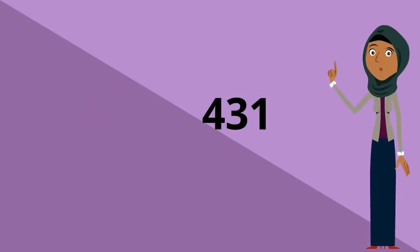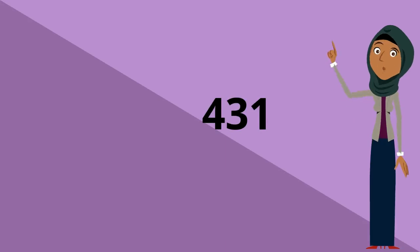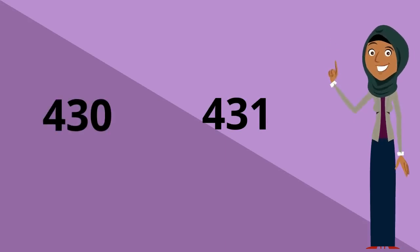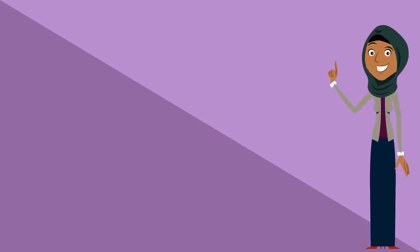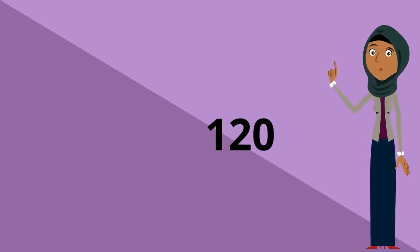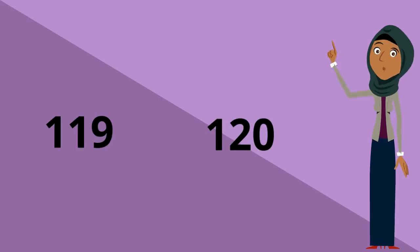What comes before 431? What's before 31? 30, yeah? So it's 430. What comes before 120? What's before 20? 90, right? So it's 119.